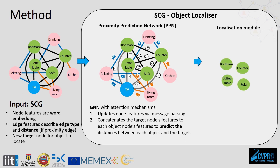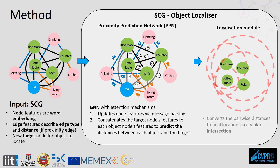The second module is the localization module. It converts the pairwise distances into circles around the visible objects and outputs the point of intersection as the final localization.